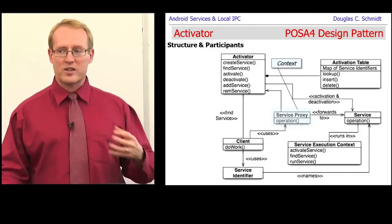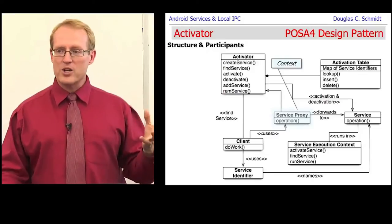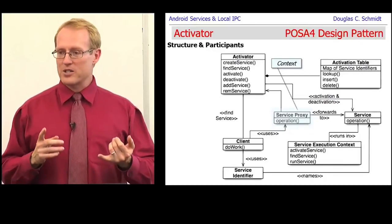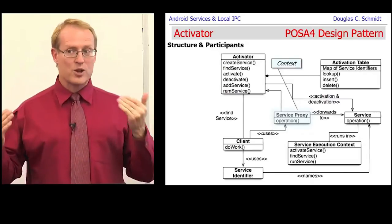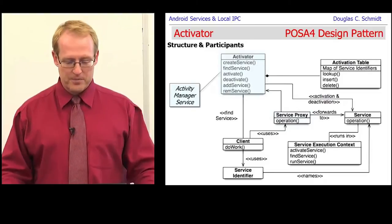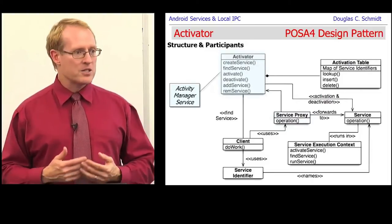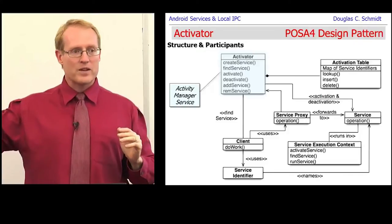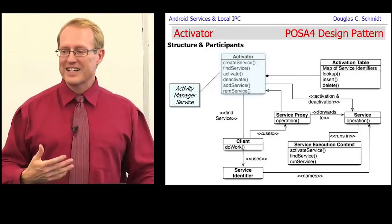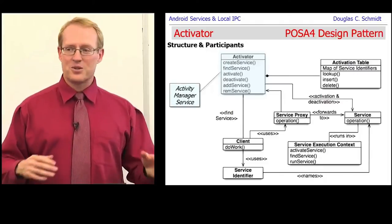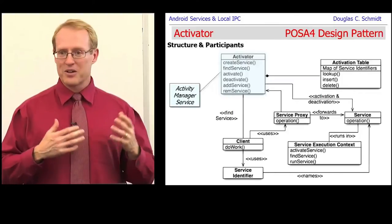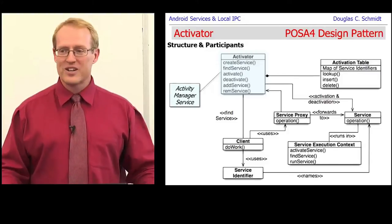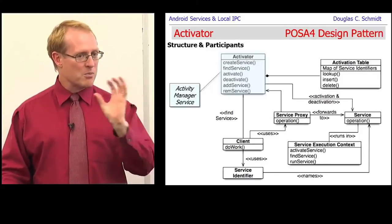There's then something called the service proxy, which is what the client sees in order to trigger an operation that will eventually cause a service to start up. In Android that's typically done through the context - operations like bind service or start service are done through the service proxy. Then you have the activator itself, which is an agent that interposes itself between the client and the service. Think of it like a Hollywood agent whose job is to connect producers with movie stars - you don't call the star directly, you call their agent. That's the intermediary role of the activator.